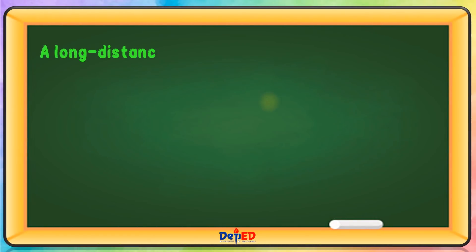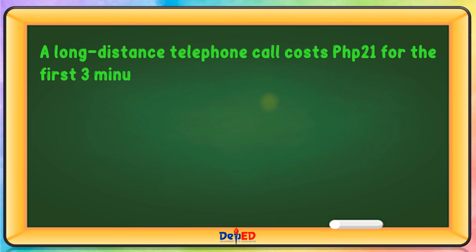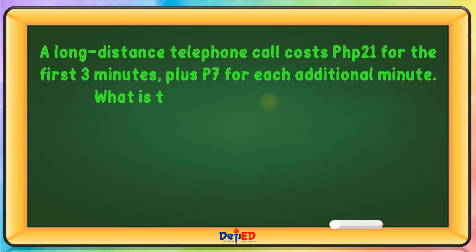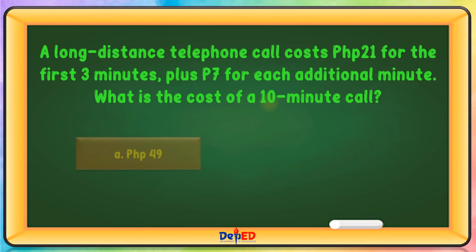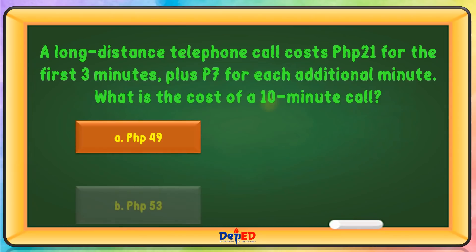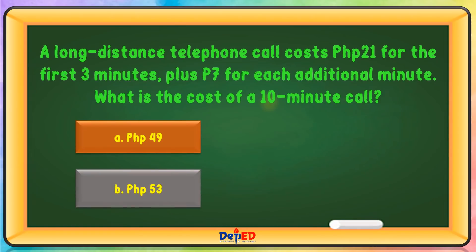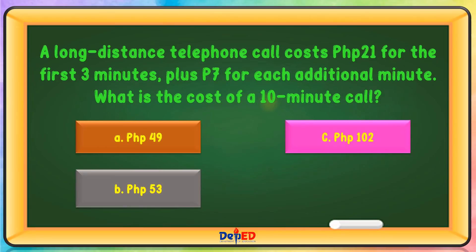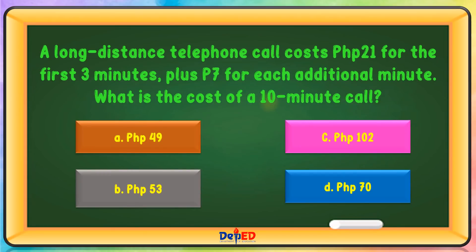A long distance telephone call costs 21 pesos for the first 3 minutes, plus 7 pesos for each additional minute. What is the cost of a 10-minute call? A. 49 pesos  B. 53 pesos  C. 102 pesos  D. 70 pesos. The correct answer is D.